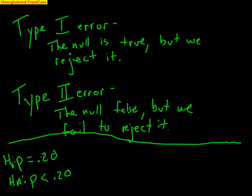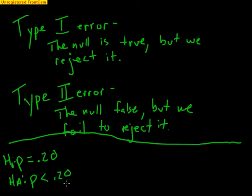A Type II error is when the null is false — it's not 20% — but we fail to reject it, so we keep a null that is false. There is a new way of making these ingents that actually works and does lower the proportion below 20%, but the error is we fail to see that — we fail to reject it. So a Type I error: it's true that the proportion is 20%, it hasn't actually lowered, but we think it has. A Type II error: the null is false, it's actually lower than 20%, but we fail to reject the null, so we're not taking advantage of a new approach that's actually better.